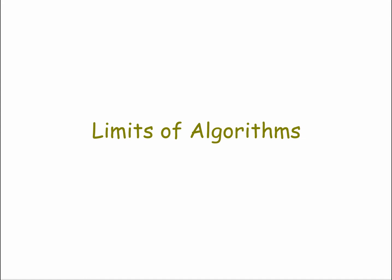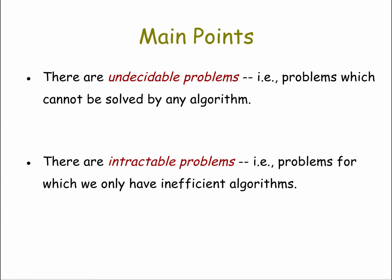In this lesson, we're going to explore some of the limits that algorithms have. We're going to look at two main types of limits. First of all, there are what are known as undecidable problems — problems for which no algorithm, in theory or in principle, can be created to solve the problem in all cases. The second type of limit are so-called intractable problems, where we have solutions for some cases, but the algorithms are too inefficient to solve the problem as the number of inputs grows large.